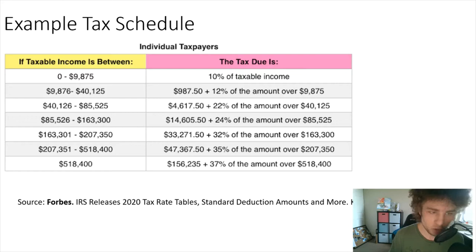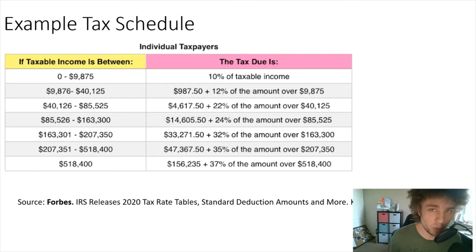An example of a tax schedule is the 2020 US tax schedule for individual taxpayers, where you're broken into different brackets and depending on how much money you make, you pay a certain percentage back. What we want to figure out is essentially what are the best boundaries for each bracket and how much of income is actually paid — and we'll see how AI, machine learning, and big data are used to accomplish this.